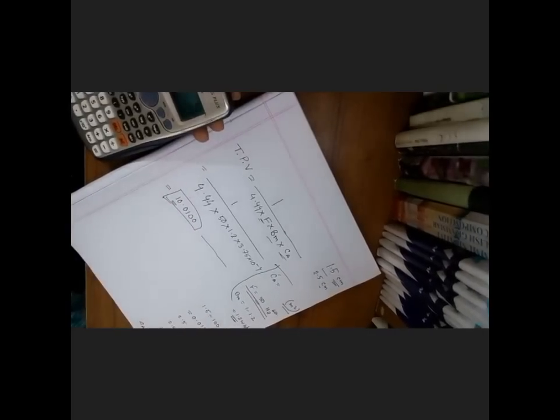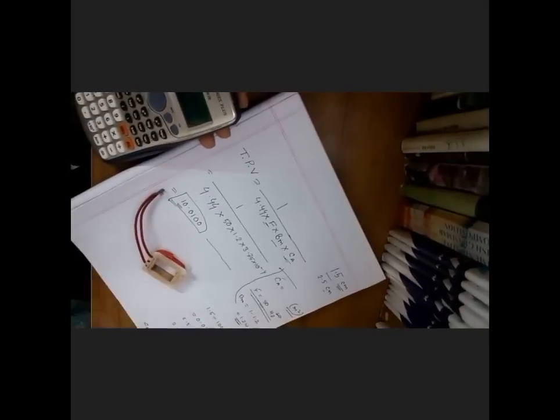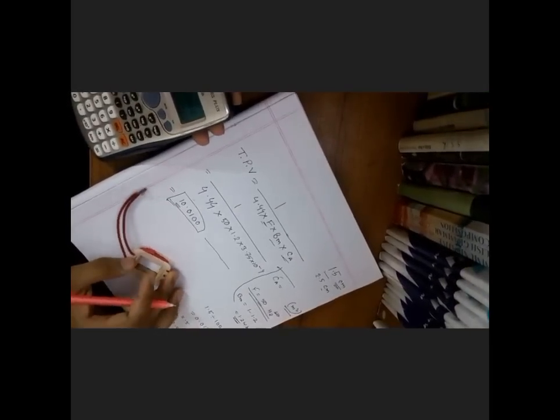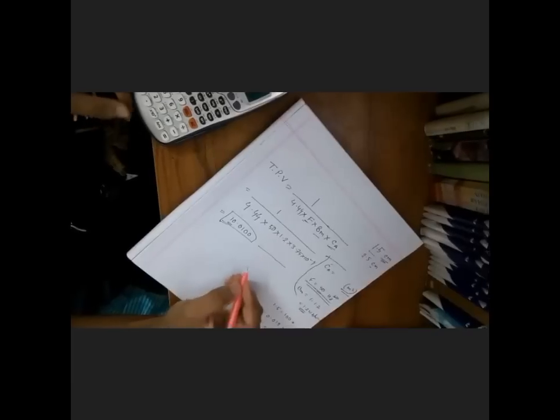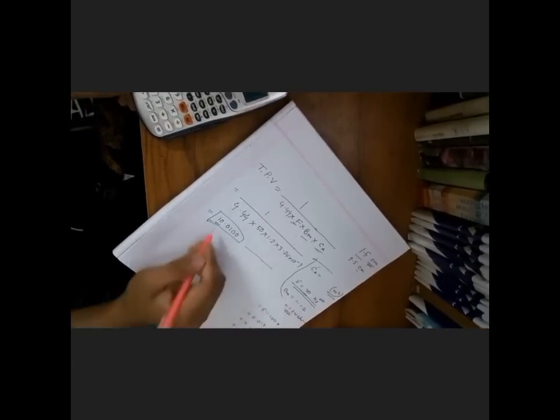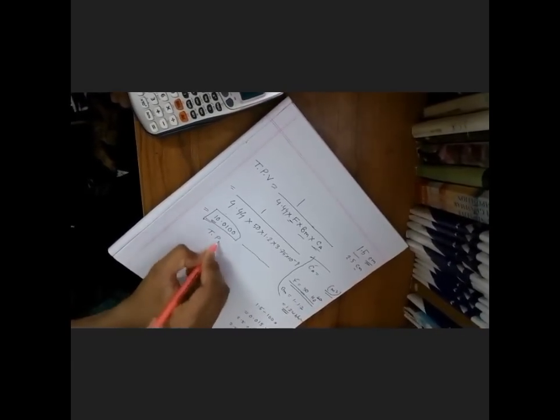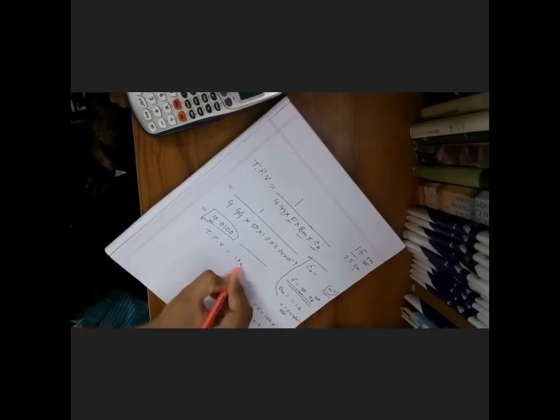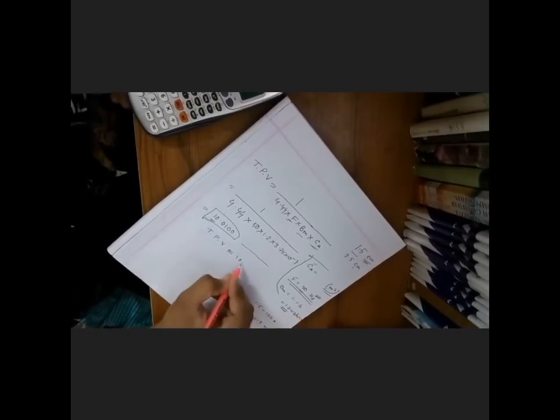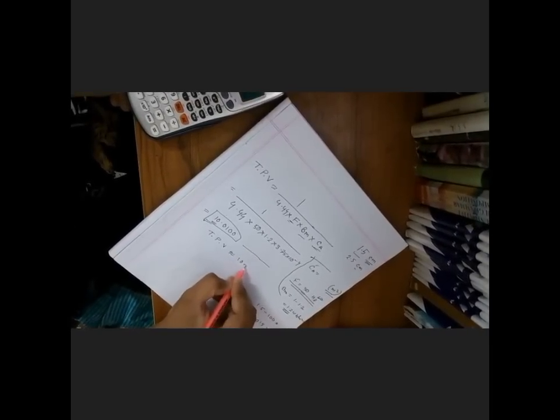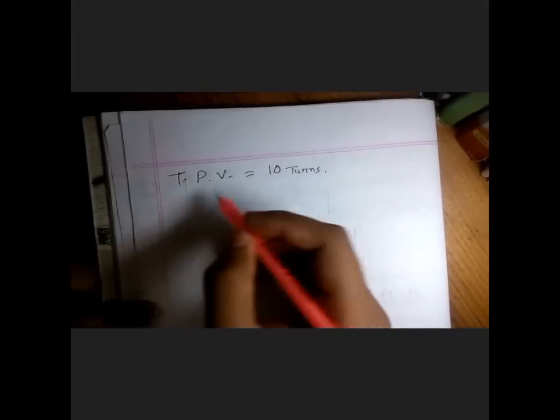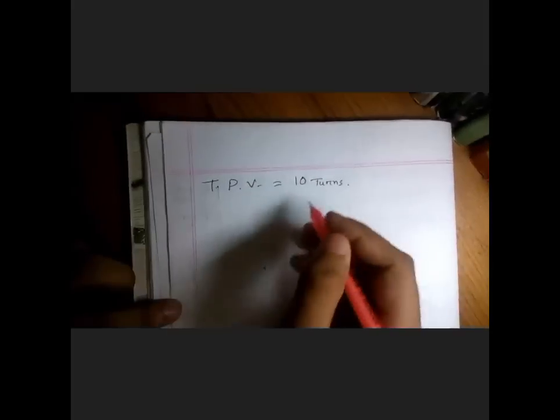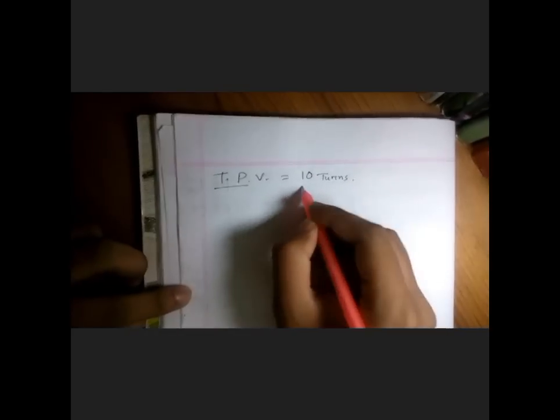So guys, we have got our turns per volt, 10, approximately 10. We are taking 10, okay, 10 turns. So guys we have got our transformers turns per volt. So approximately we have to turn 10 turns for one volt.